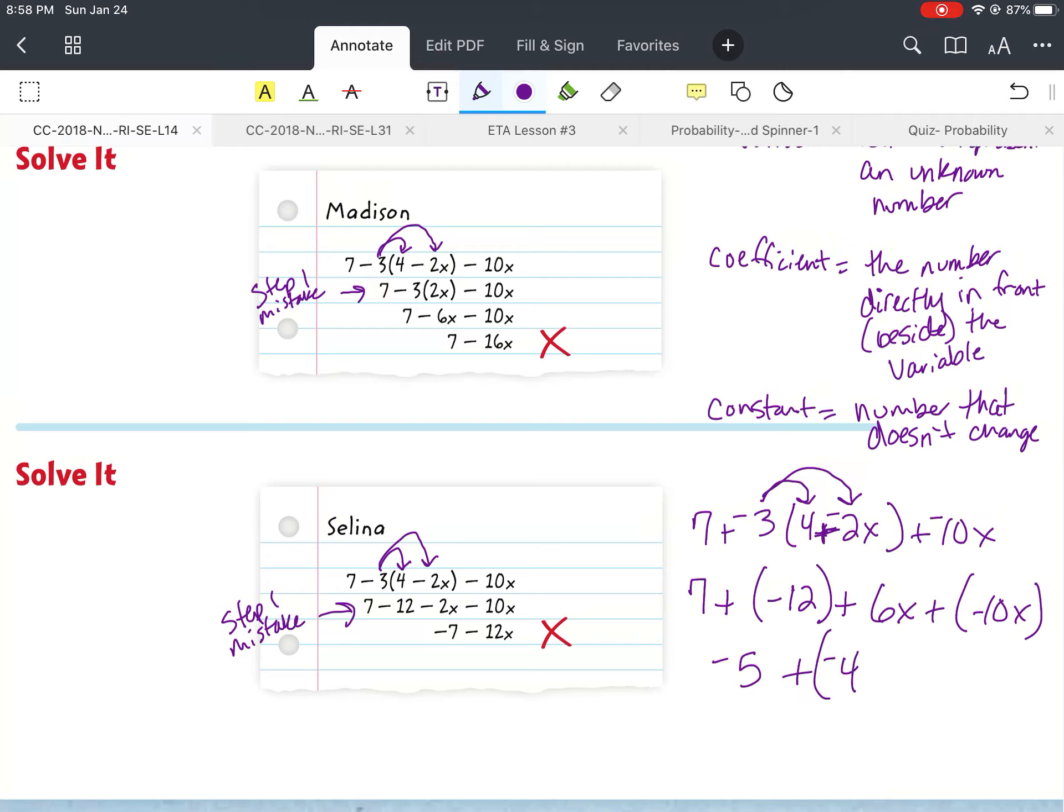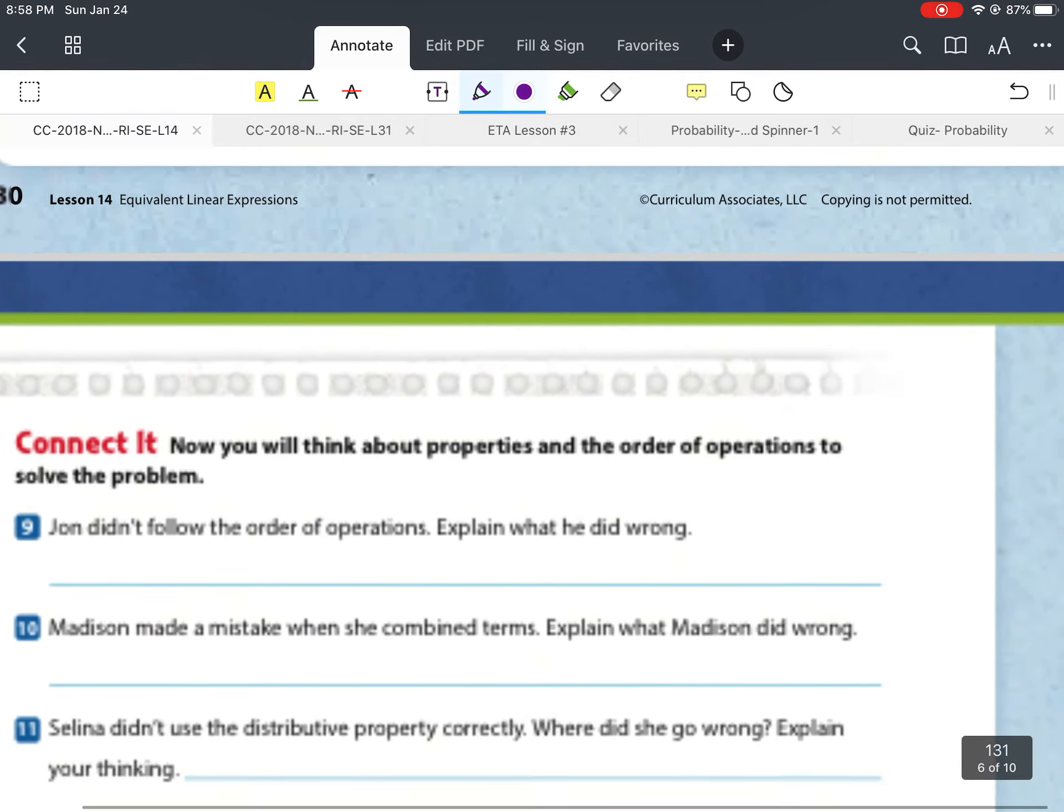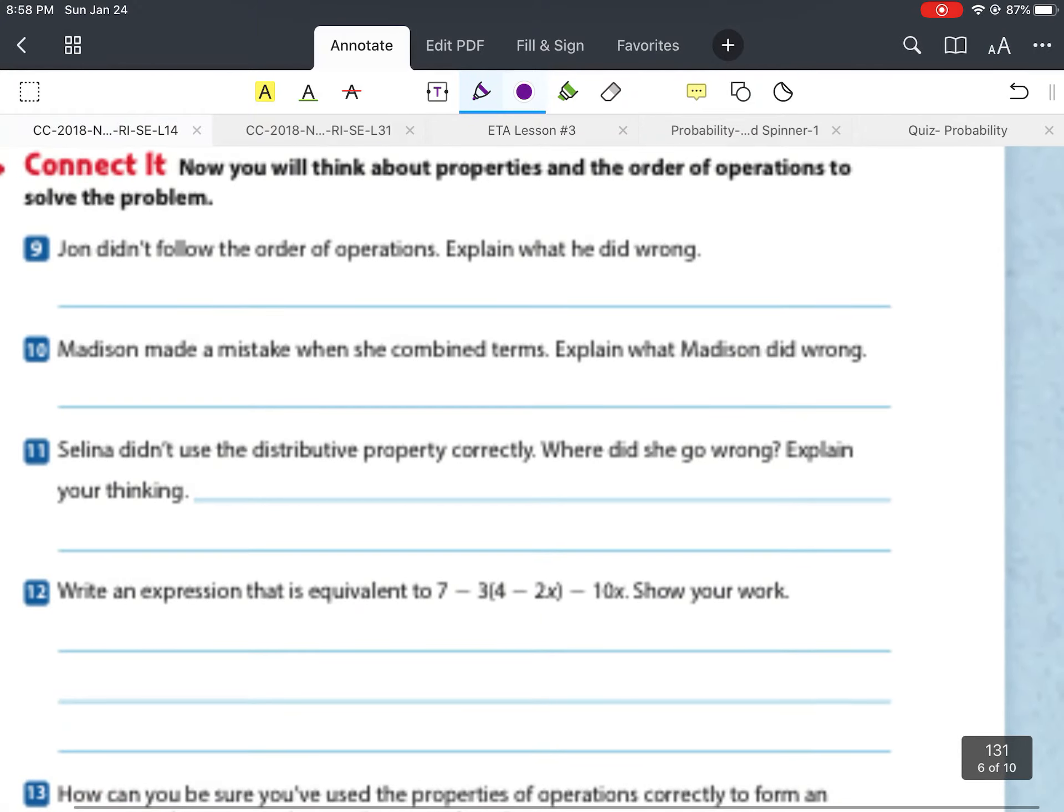We're going to add to it. We have 6x plus negative 10x. Well, again, they're unlike signs. We're going to have to subtract. Take sign large number. 10 minus 6 is 4. 10 is larger. 10 is negative. So our answer here is negative. So it's negative 5 plus negative 4x is our answer there.